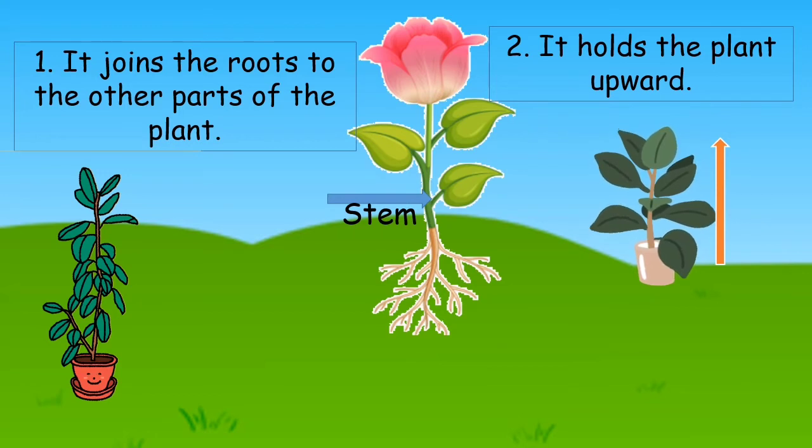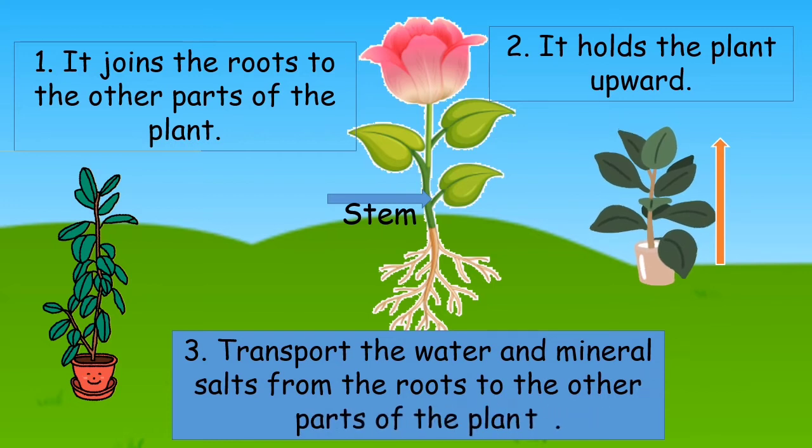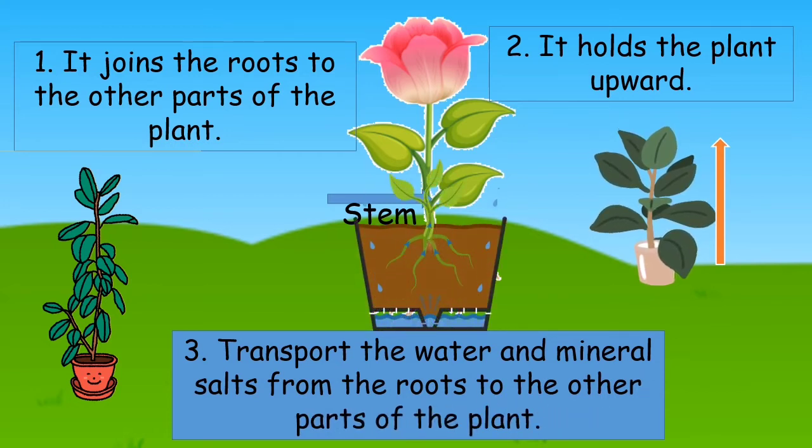Function number three: transport the water and mineral salts from the roots to the other parts of the plant.